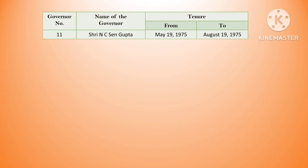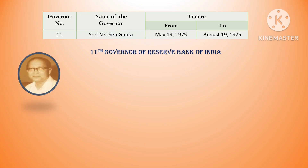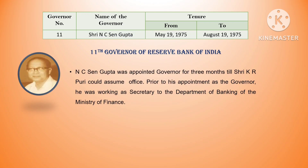The eleventh governor was N.C. Sengupta. His tenure was from May 19, 1975 till August 19, 1975. He was appointed as governor for 3 months until Sri K.R. Puri could assume office. Prior to his appointment as governor, he was working as secretary to the Department of Banking, Ministry of Finance.